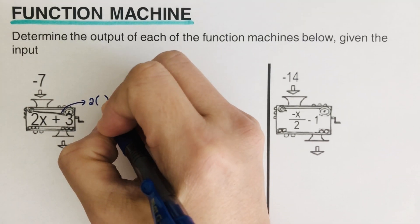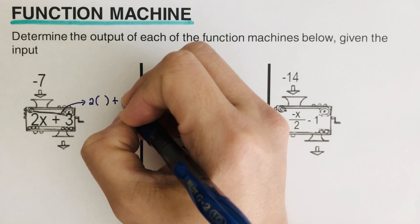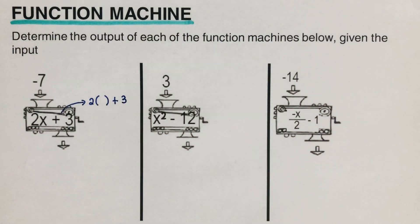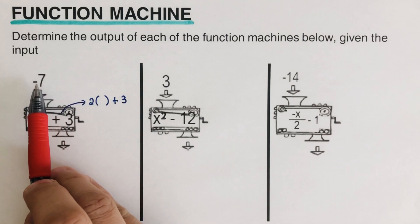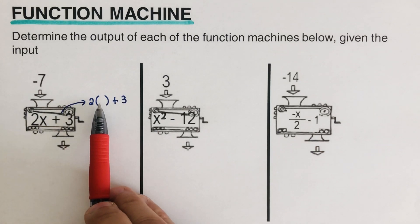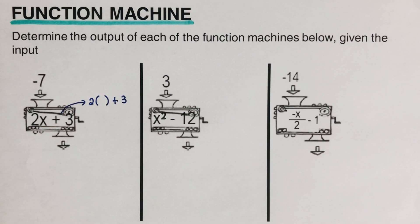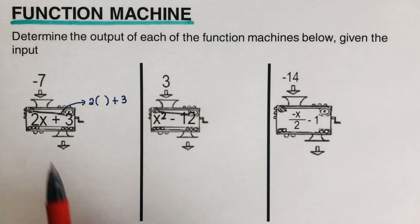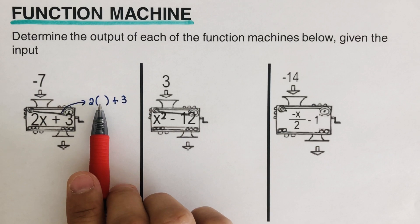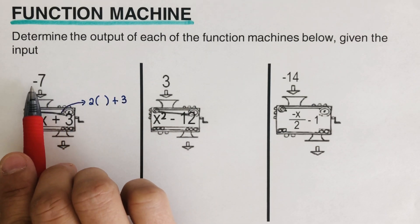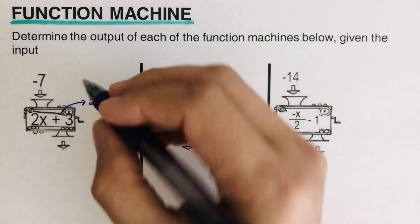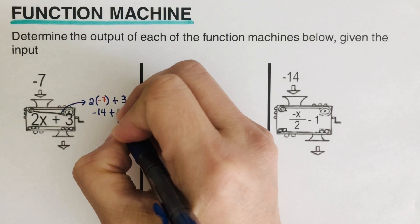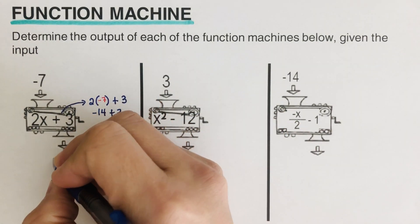Here's a trick to determine the output correctly: whatever the variable is inside the machine, change it into a parenthesis before you plug in the input. If you don't change it into a parenthesis, you're going to mess up with the negatives when you do the arithmetic. So change the variable to a parenthesis first, then plug in the input — which is negative seven. We multiply: 2 times negative 7 is negative 14, plus 3, so the output is negative 11.